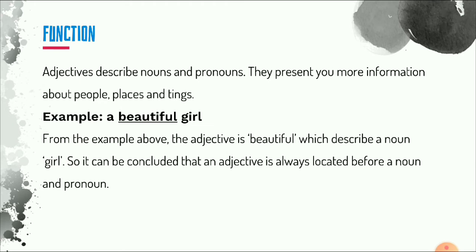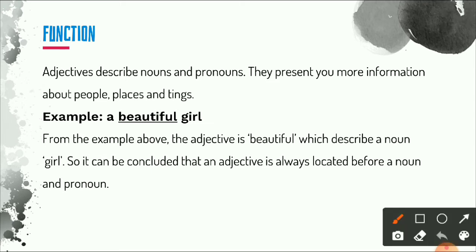We will start with the function of adjectives. Adjectives describe nouns and pronouns. They present more information about people, places, and things. For example, we have 'a beautiful girl.' The adjective here is 'beautiful' because the word 'beautiful' presents information or a description about 'girl.' So an adjective is always located before a noun or pronoun because the function of the adjective itself is to describe the noun.